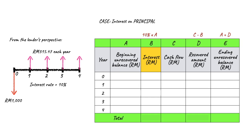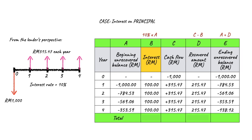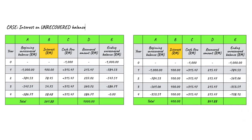Now let us consider the calculation for the rate of return if it is based on the principal amount. The same idea applies, but the difference is the interest is based on the principal amount. The principal amount Malik borrowed is RM1,000, so the amount of interest Malik has to pay remains RM100 every year. If we complete the table, you will realize that the recovered amount is just RM861, which is not sufficient to cover the amount he borrowed. The total interest collected increases dramatically to RM400. Comparing these two methods, clearly an interest rate applied only to the principal amount takes longer time to settle, and the total interest is also higher.